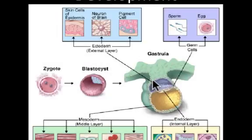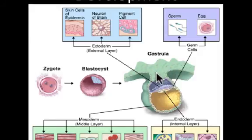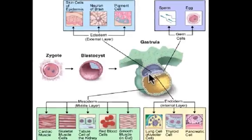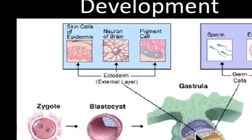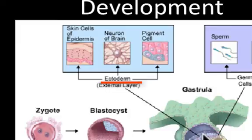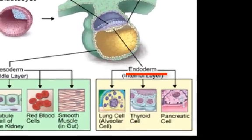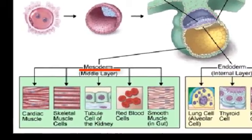Here's the gastrula, a little further along. The green cells embedded into the endometrial lining will become the placenta and the umbilical cord, which will nourish the developing embryo through pregnancy. The inner cell mass now has three distinct layers: the ectoderm, which will become nervous tissue and the epidermis; and the endoderm, which will become glands.